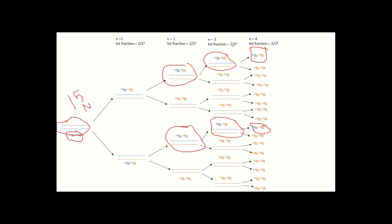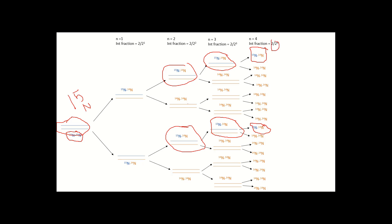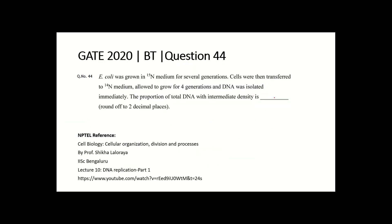We can generalize: the total number of DNA molecules in generation n is 2ⁿ, and the number of intermediate-density duplexes always remains 2. For generation 4 (n=4), the fraction is 2 divided by 2⁴, which equals 2/16 = 0.125, approximately 0.13. So the proportion of total DNA with intermediate density is 0.13.